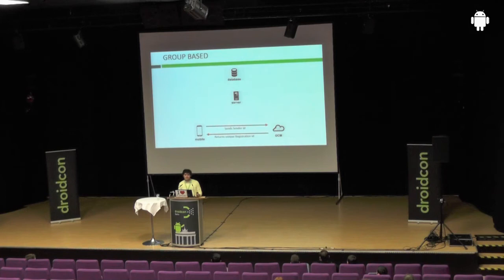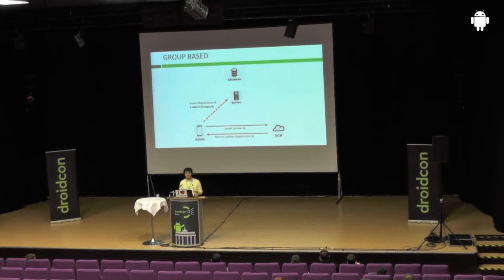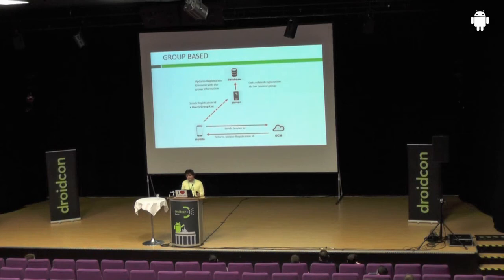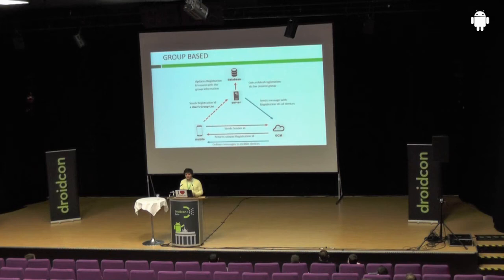For group-based notifications, the registration process has small differences. We get registration IDs as before, but when sending them to our server, we include a group list obtained in various ways, and update the registration ID records with that group list. When sending to a specific group, we query for the relevant registration IDs and send them to Google Cloud Messaging, which delivers the messages to the target mobile devices.